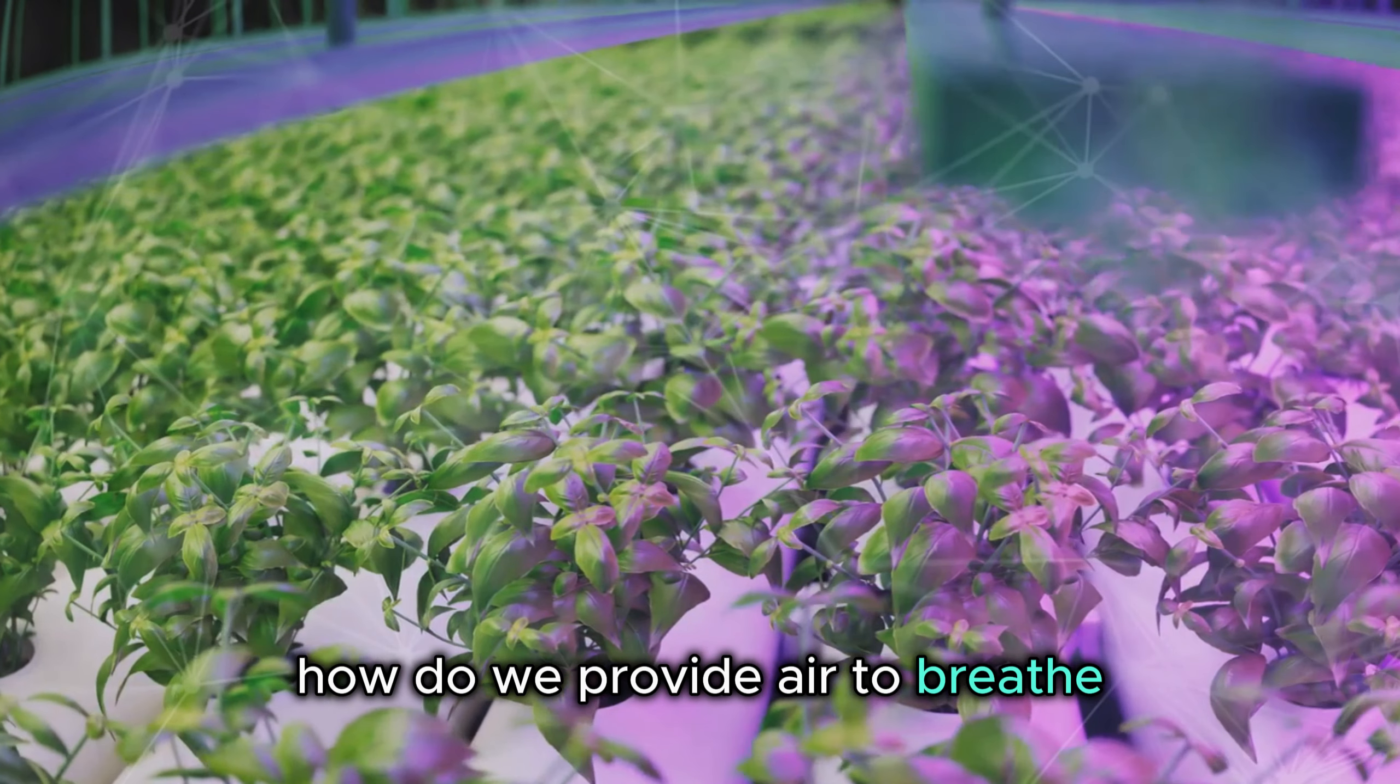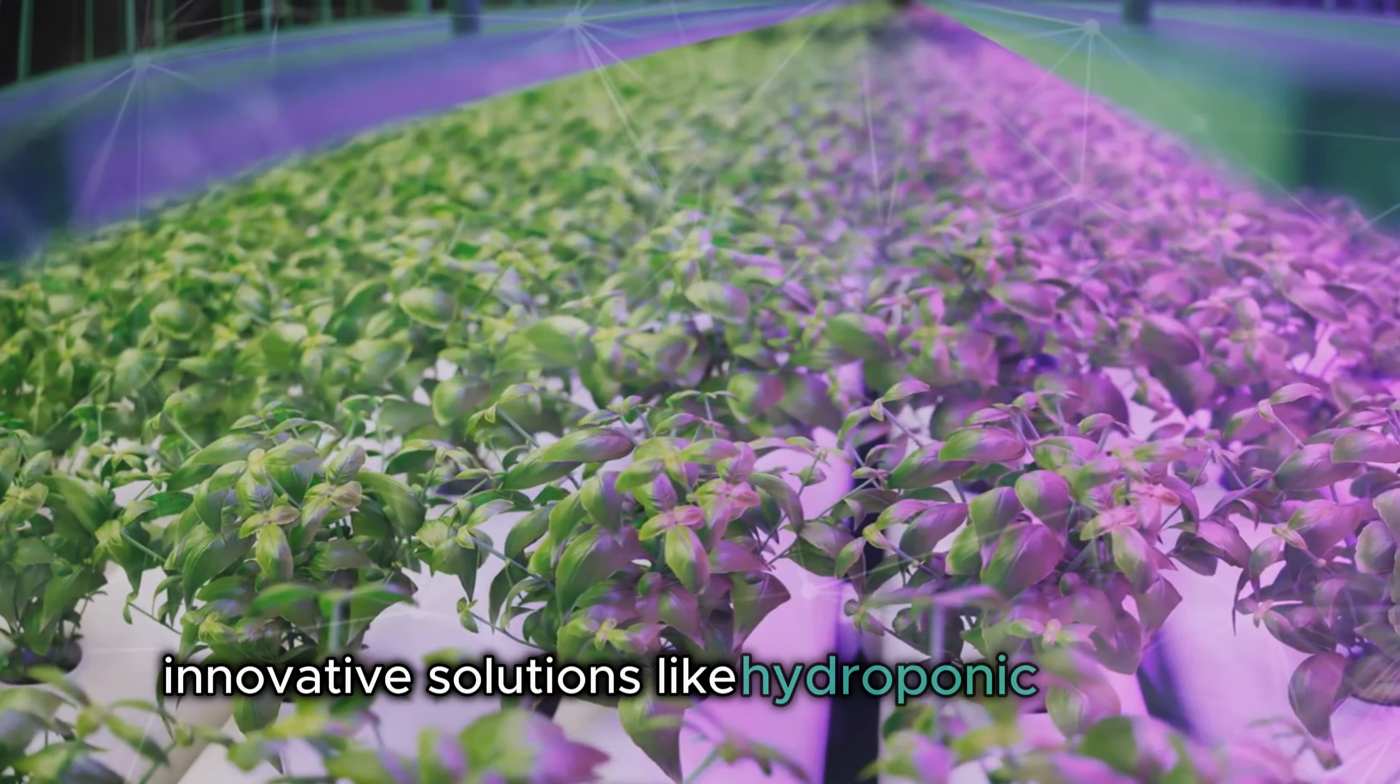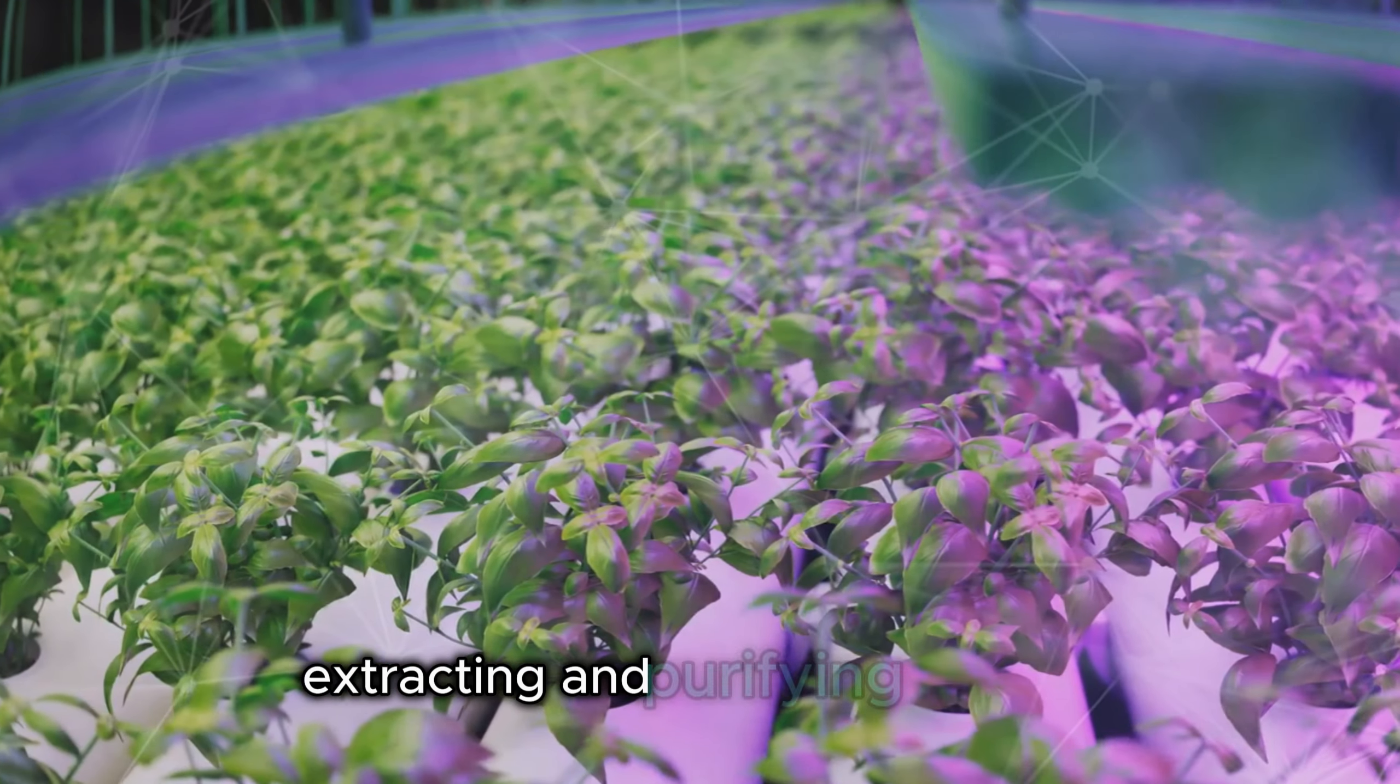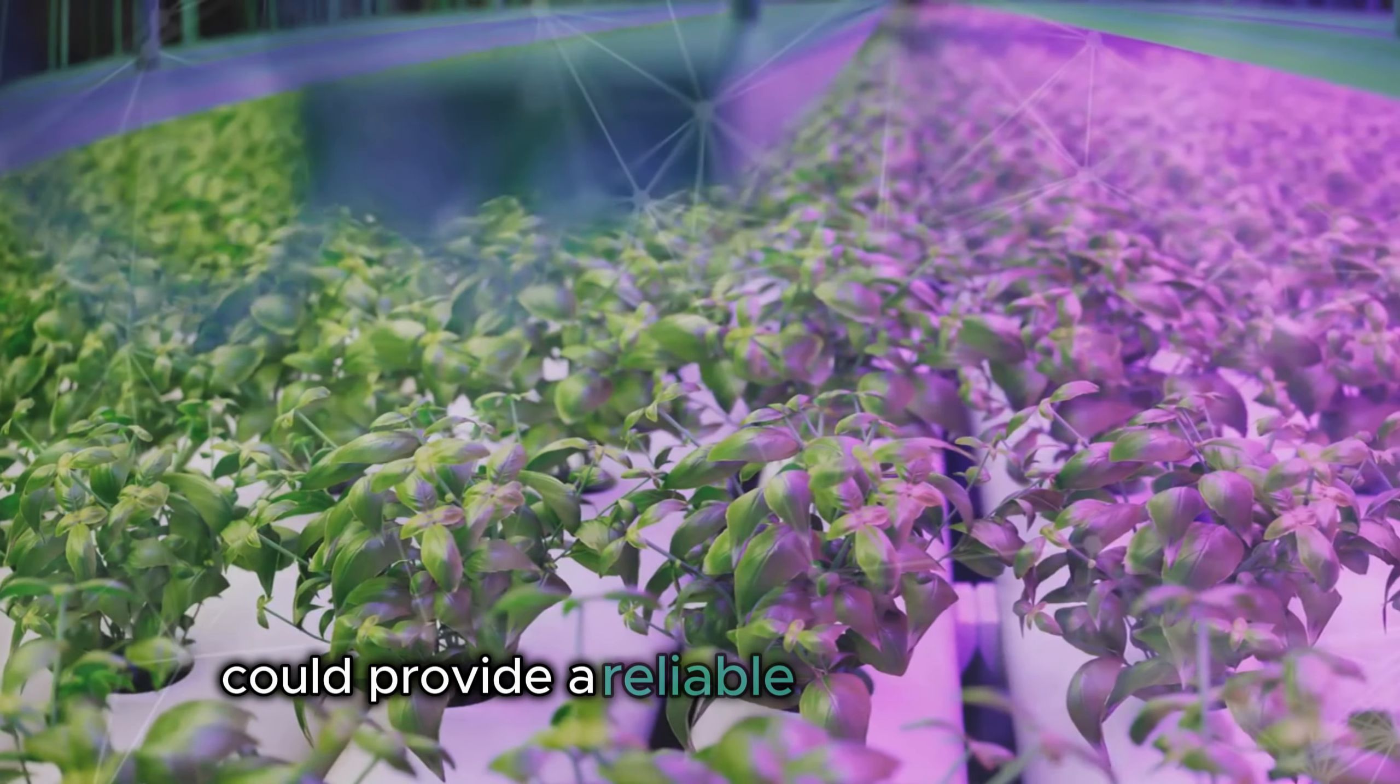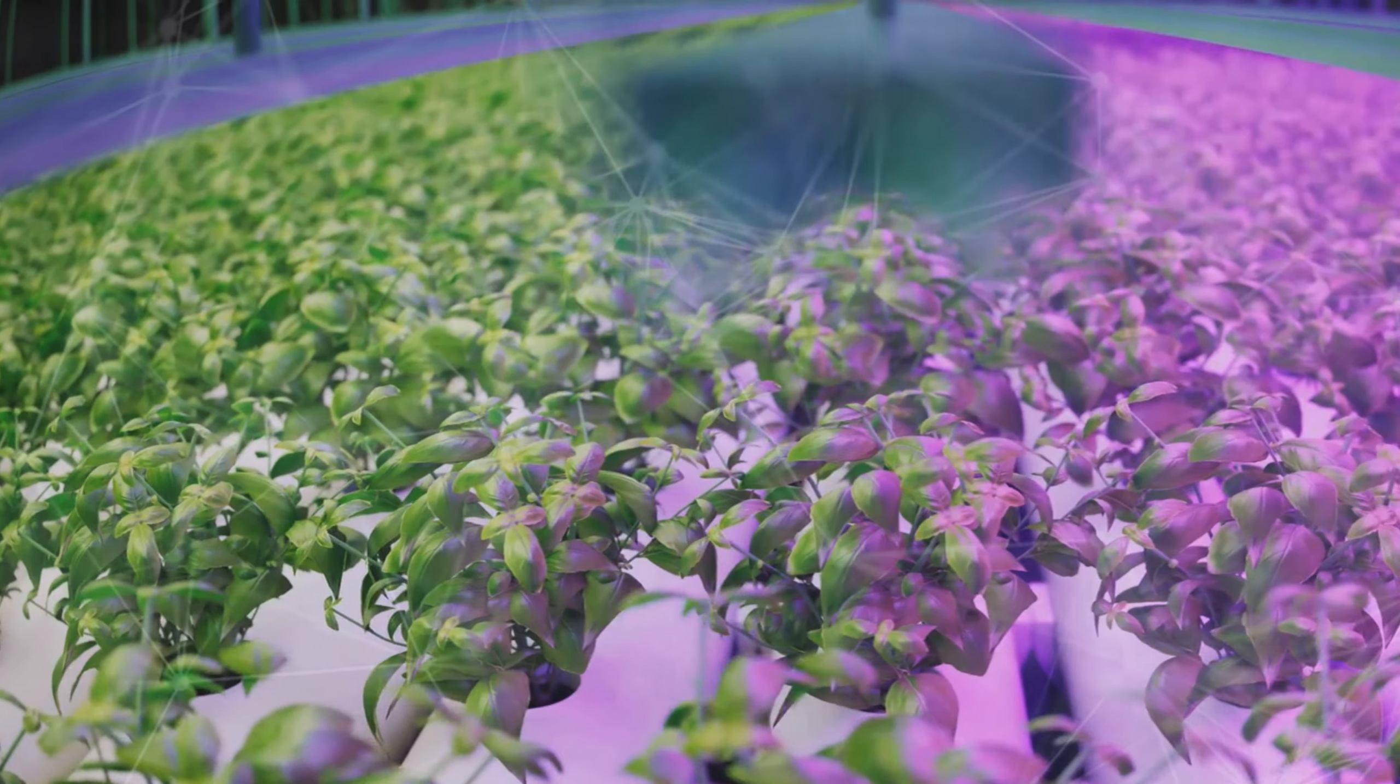How do we provide air to breathe, water to drink and food to eat? Innovative solutions, like hydroponic gardens, could allow us to grow food in a controlled environment. Extracting and purifying lunar ice could provide a reliable source of water. These are essential steps towards creating a self-sustaining habitat.